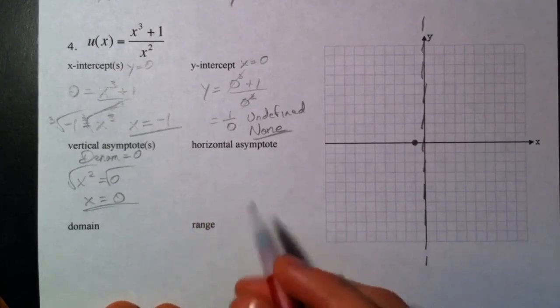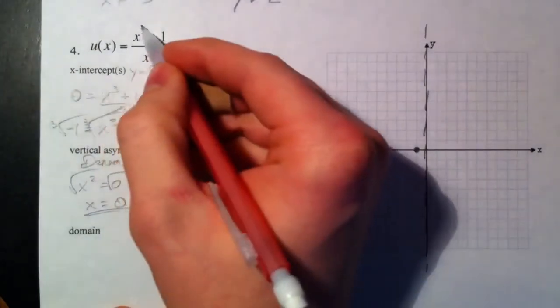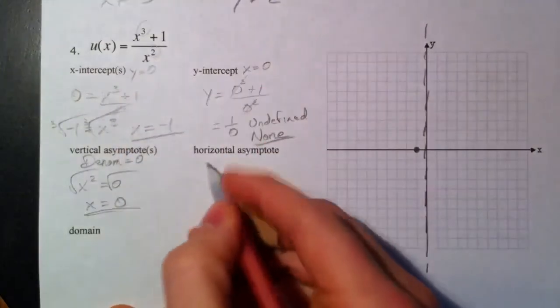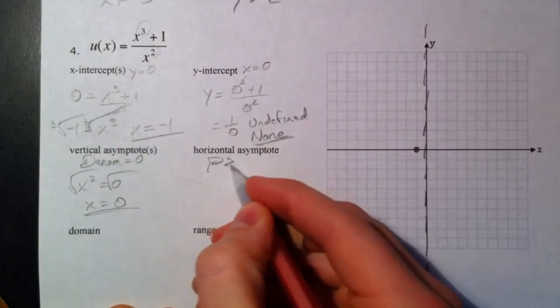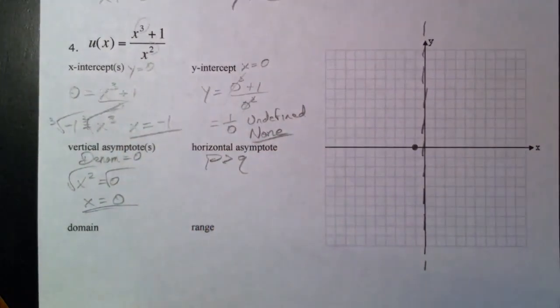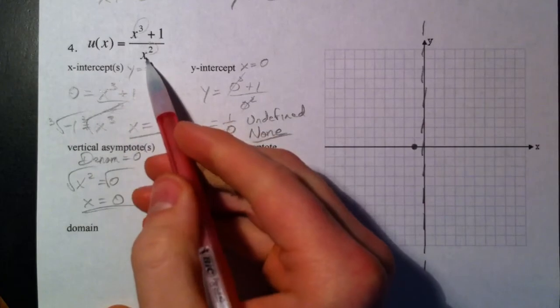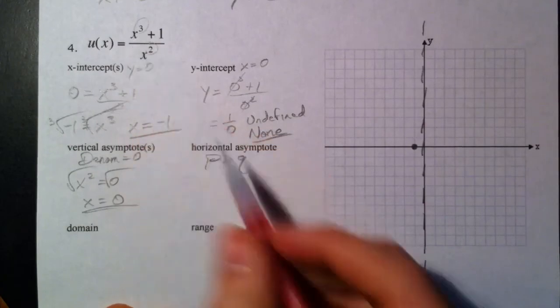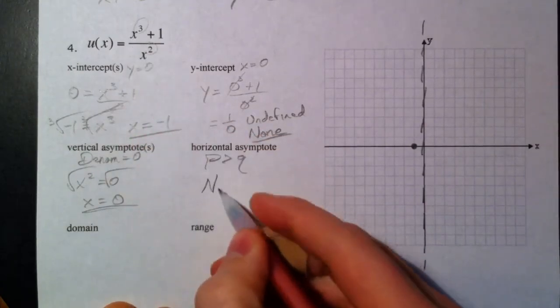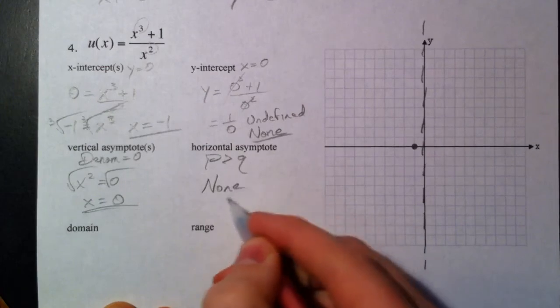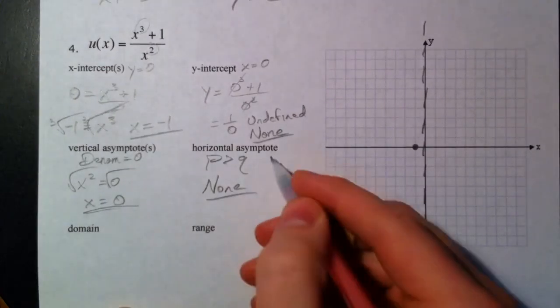The degree on top is 3, degree on the bottom is 2, and so p is bigger than q. So what that means is the top is going to get bigger a lot faster than the bottom, and so there is not going to be a horizontal asymptote - none at all. P equals q and p greater than q doesn't give you any.